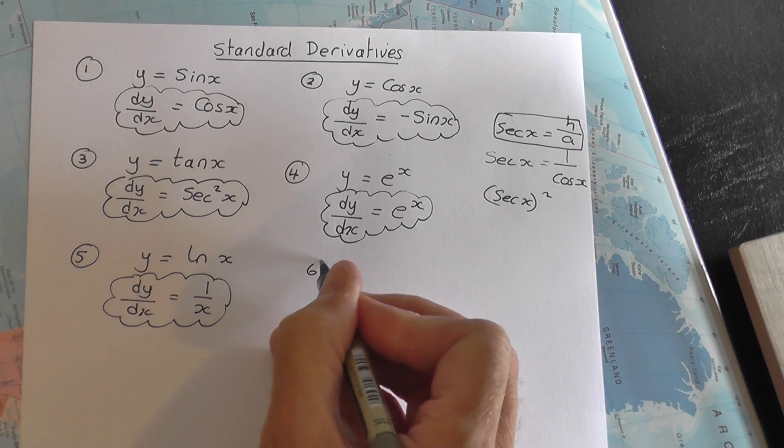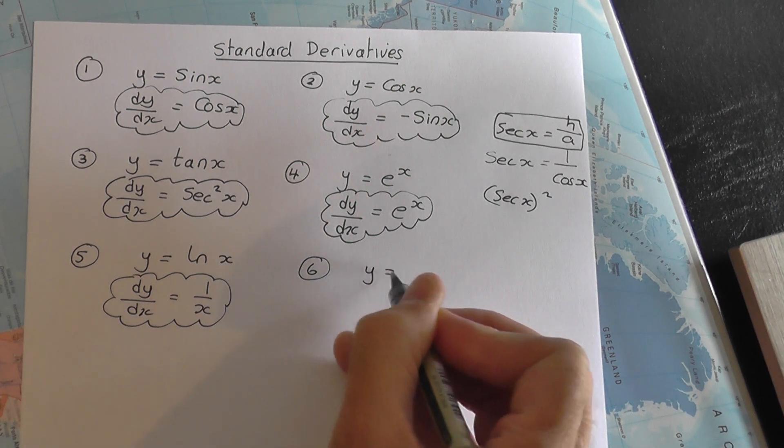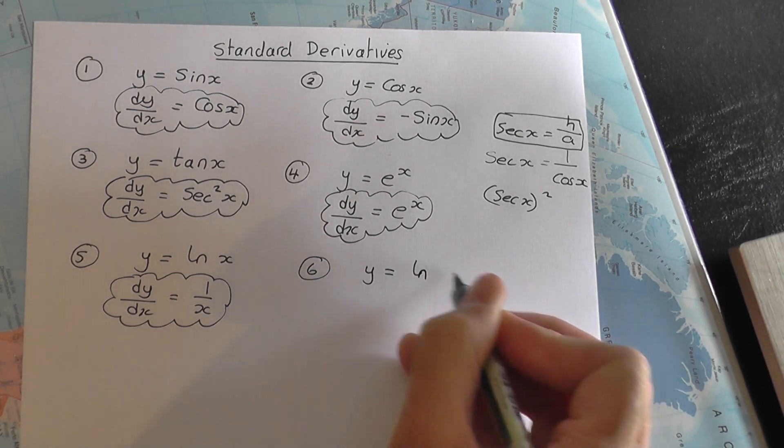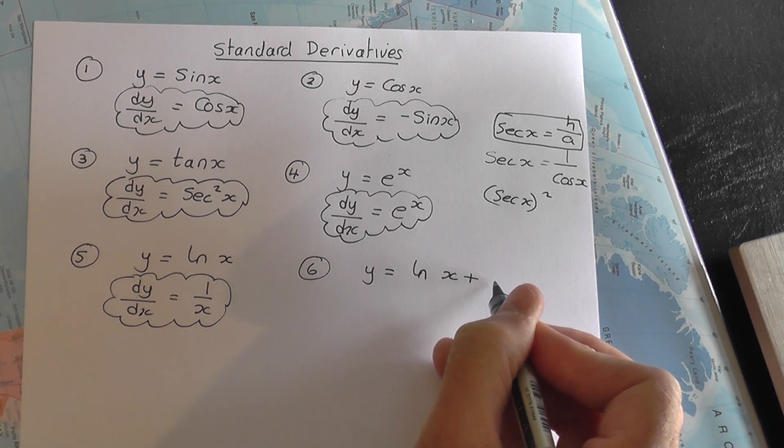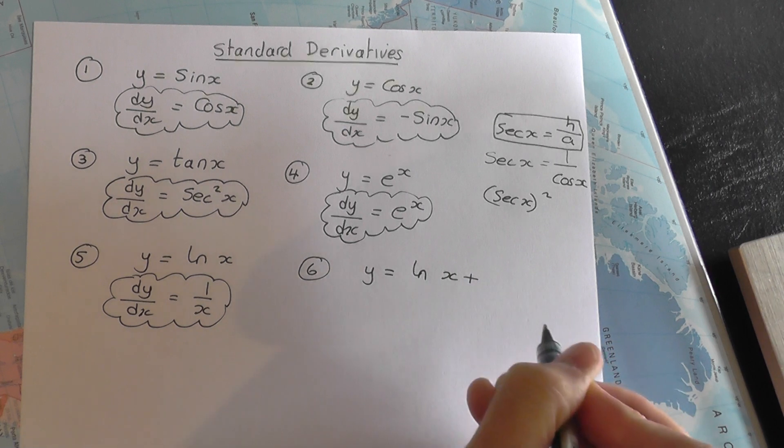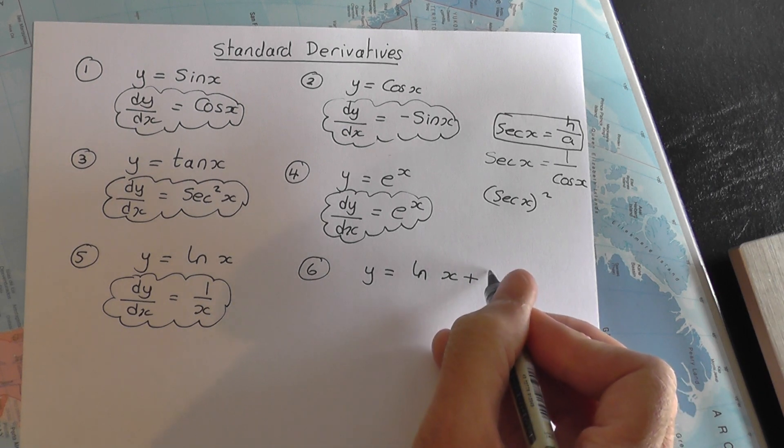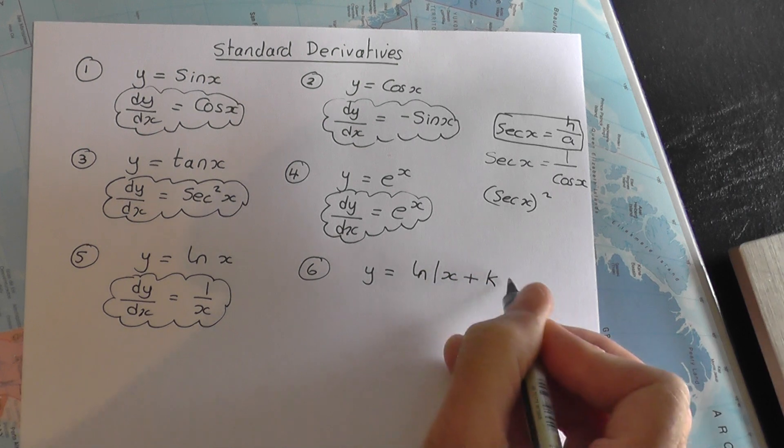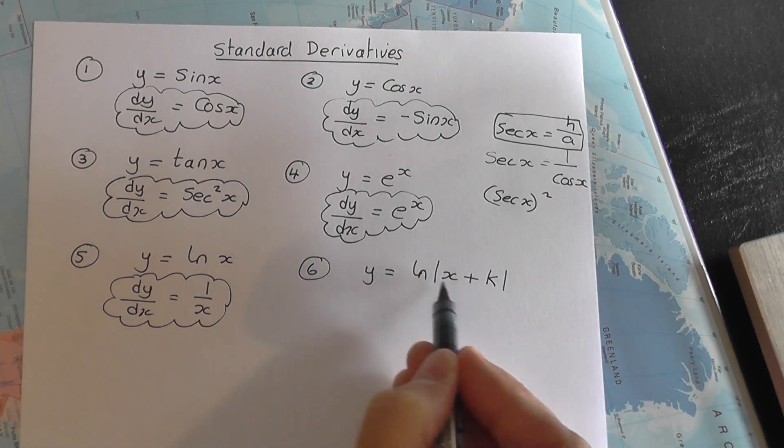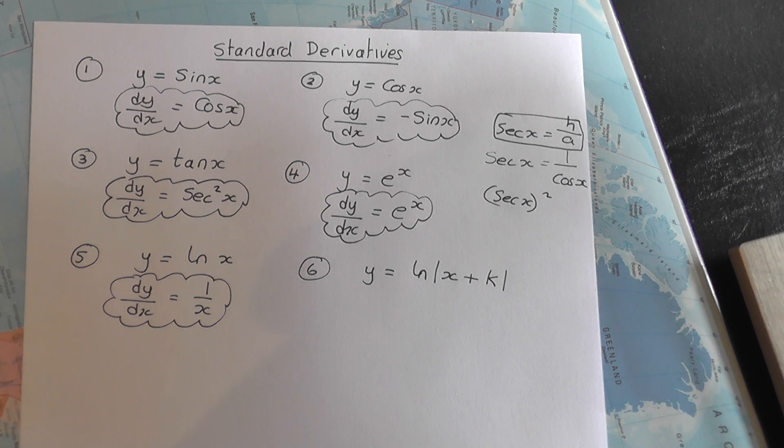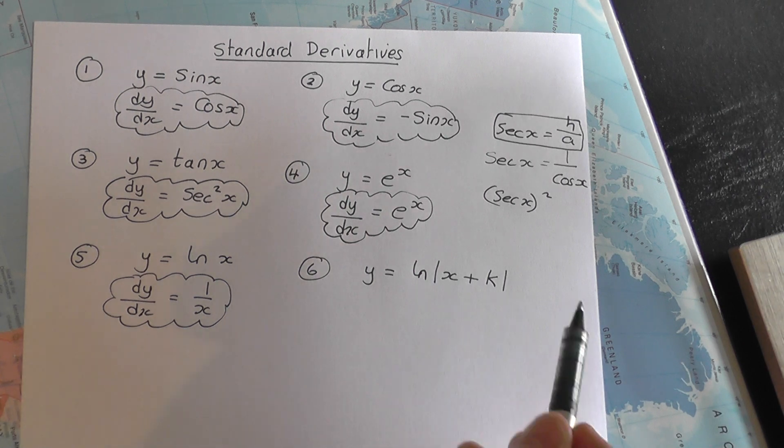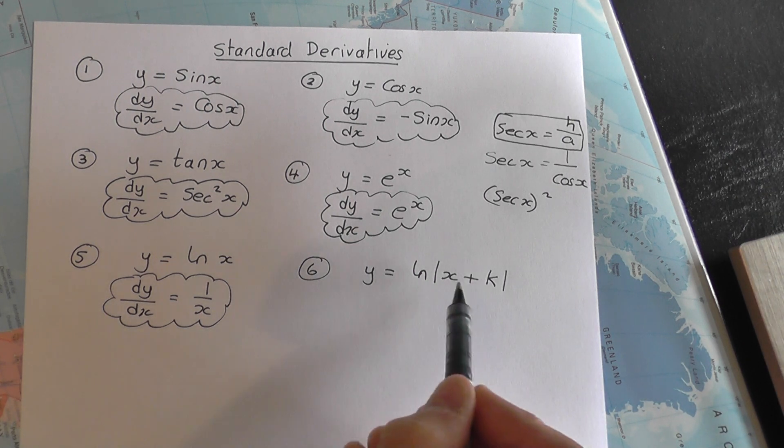And I would think the final one for now that you need to know is that sometimes you might have y equals log to base e of x plus a number. This number might be positive or negative, it doesn't matter, it can be any number. We're going to introduce modulus signs here. If you're not sure about modulus signs, don't worry about it for the moment. I'll explain that in another video when we talk about log and exponential work.